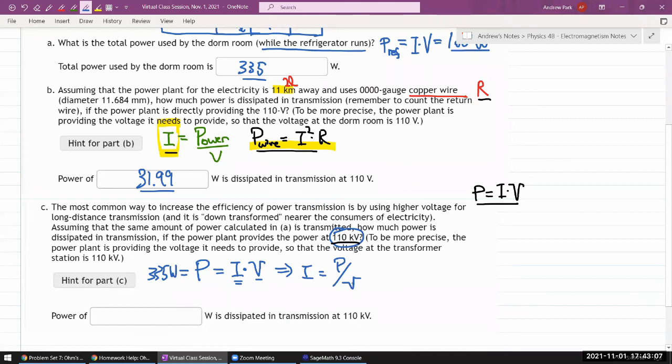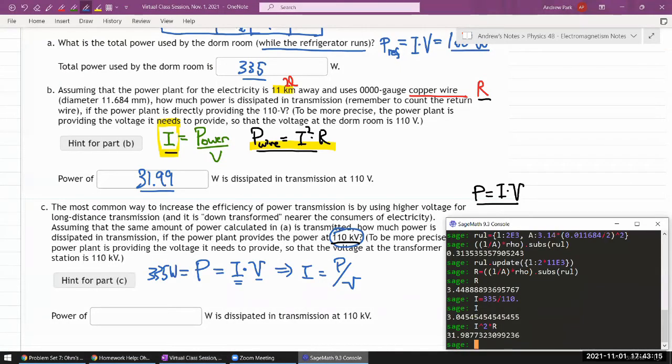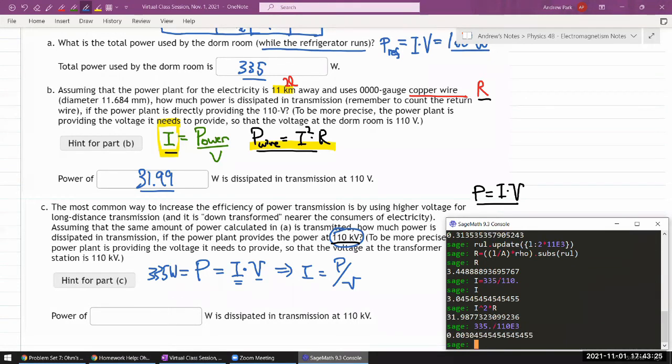So the current will be the power divided by voltage. Oh yeah, same expression we had. But we are dividing now by much larger voltage. So if you look at the number, the 335 Watt divided by 110 kilovolts, so 10 to the power of 3, it's a much lower current of 3.05 milliampere. So we did that updated current to the rest is the same for the amount of power. So let me put this into current I.